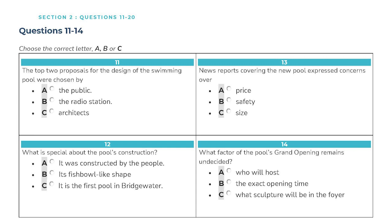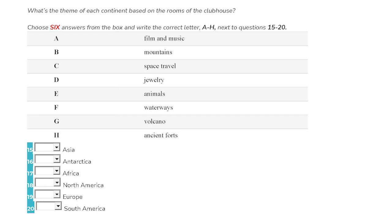Before you hear the rest of the talk, you have some time to look at questions 15 to 20. Now listen and answer questions 15 to 20. The theme of the clubhouse is set to be international waters, with a different section representing each continent, designed by the legendary local artist Roberta Anuzi. Representing Asia in the reception area will be a mosaic made up of prominent animals indigenous to the continent, a camel, a panda, and the Siberian white tiger, to name just a few.